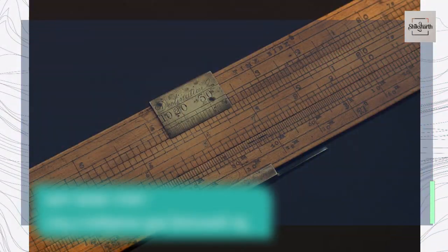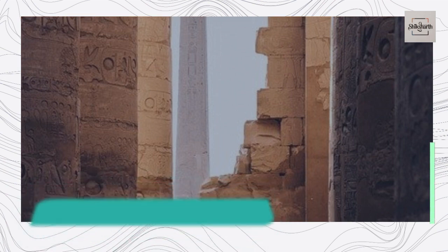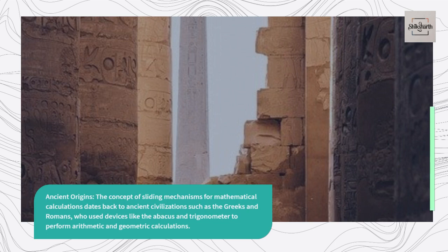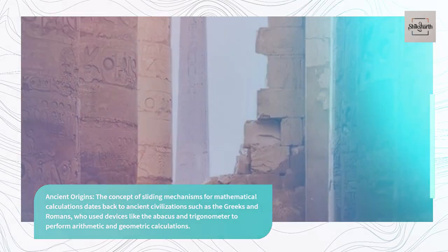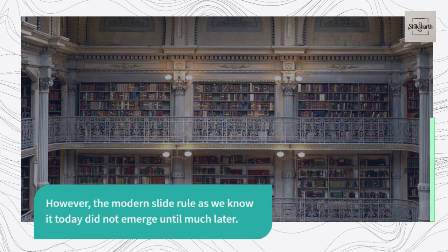Let's explore the journey of the slide rule. Ancient Origins: The concept of sliding mechanisms for mathematical calculations dates back to ancient civilizations such as the Greeks and Romans, who used devices like the Abacus and Trigonometer to perform arithmetic and geometric calculations. However, the modern slide rule as we know it today did not emerge until much later.